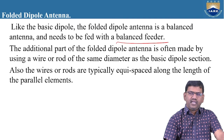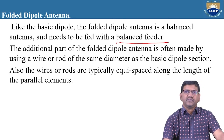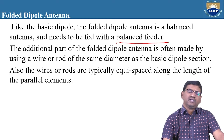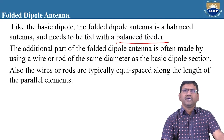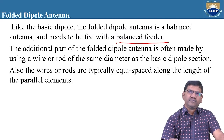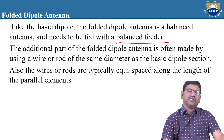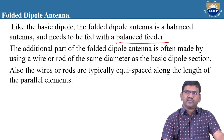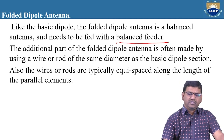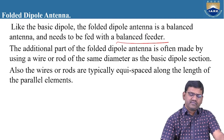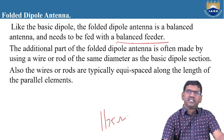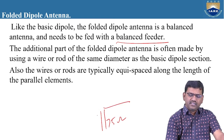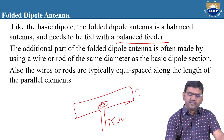The balanced feeder means the input impedance of the transmission line must be equivalent to the input impedance of the antenna. If you want to match the impedance of the transmission line with respect to the antenna, you need to use a balanced transmission line. For example, if the transmission line impedance is 75 ohms, the antenna impedance must also be 75 ohms.